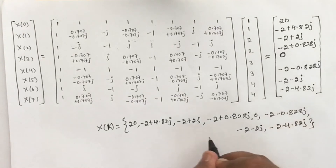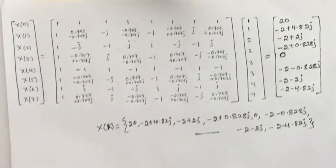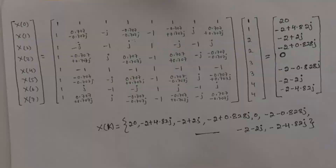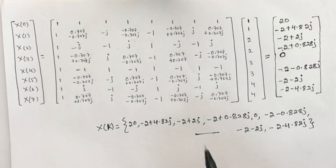So, the 8-point DFT for the given sequence is: 20, minus 2 plus 4.82j, minus 2 plus 2j, minus 2 plus 0.828j, 0, minus 2 minus 0.828j, minus 2 minus 2j, minus 2 minus 4.82j. Hope you have understood the topic. Thank you.